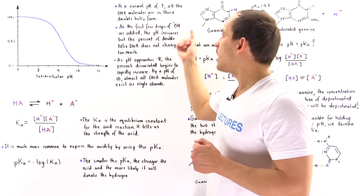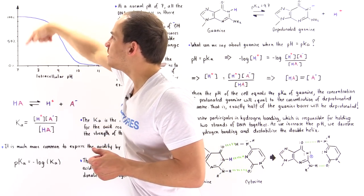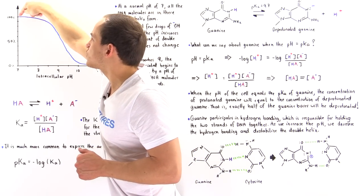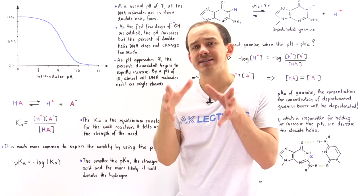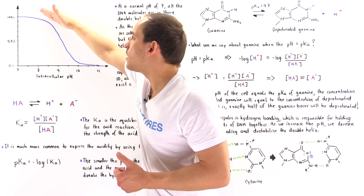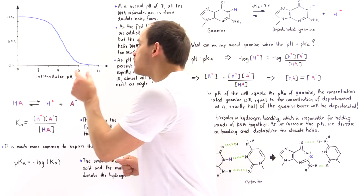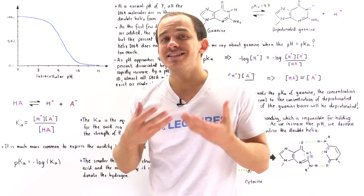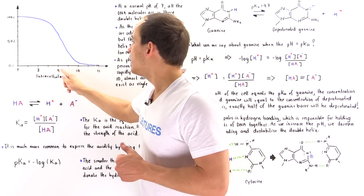As we begin to add a few drops of hydroxide ions, we begin to increase our pH. Initially, the slope is essentially flat — essentially zero — so initially changing the pH doesn't really change the amount of DNA molecules that exist in their double helix form. But as we approach a pH of 9, the slope becomes much more steep and much more negative. Between pH 9 and 10, a small change in pH creates a very large change in the y-value, and the majority of those DNA molecules actually break down into their single strand form.